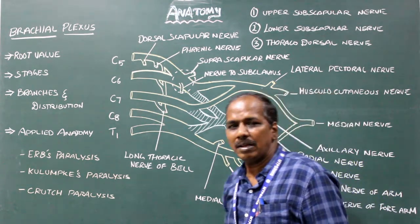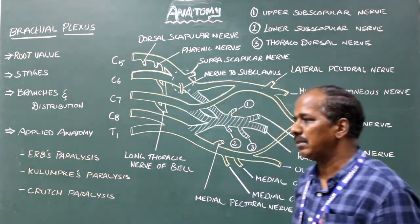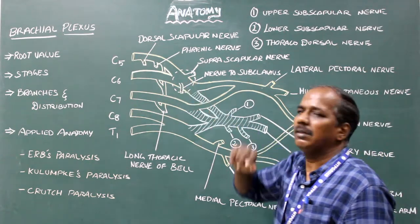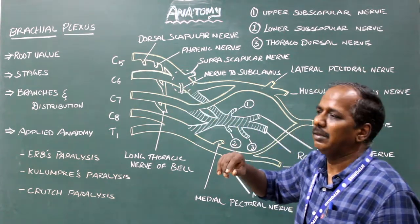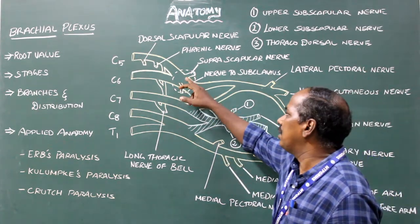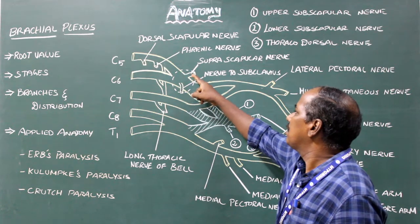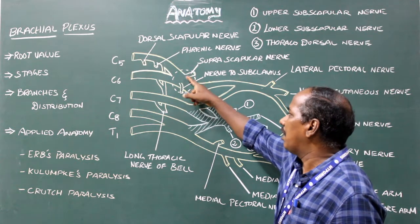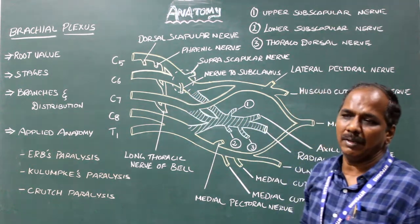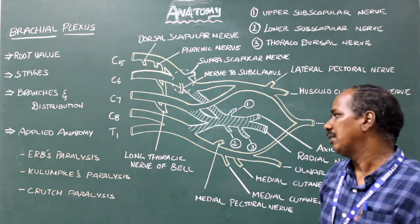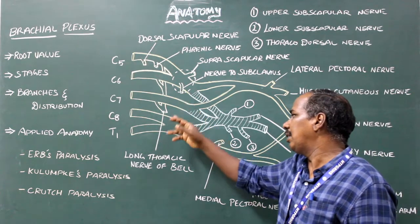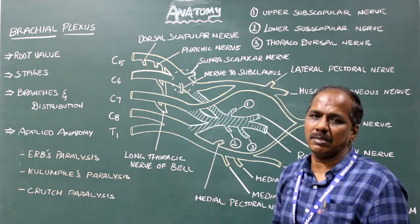Branches from the trunk stage — specifically in the upper trunk, there are two branches: the suprascapular nerve and the nerve to subclavius. There are no branches from the middle and the lower trunks.